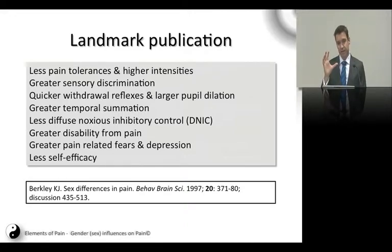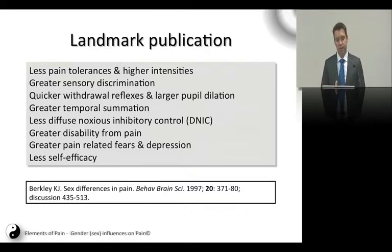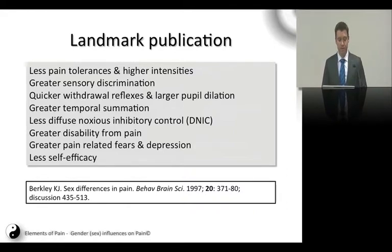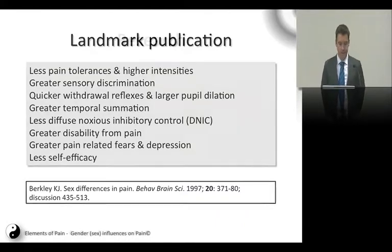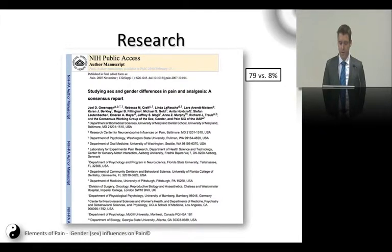In summary, females have less pain tolerance, higher pain intensity, greater sensory discrimination, a quicker withdrawal reflex, greater pupil dilation, and greater temporal summation. They have less diffuse noxious inhibitory control — where pain in one part of the body reduces pain in another. Females also experience greater disability from pain, along with greater pain-related fears and depression, and lower self-efficacy.